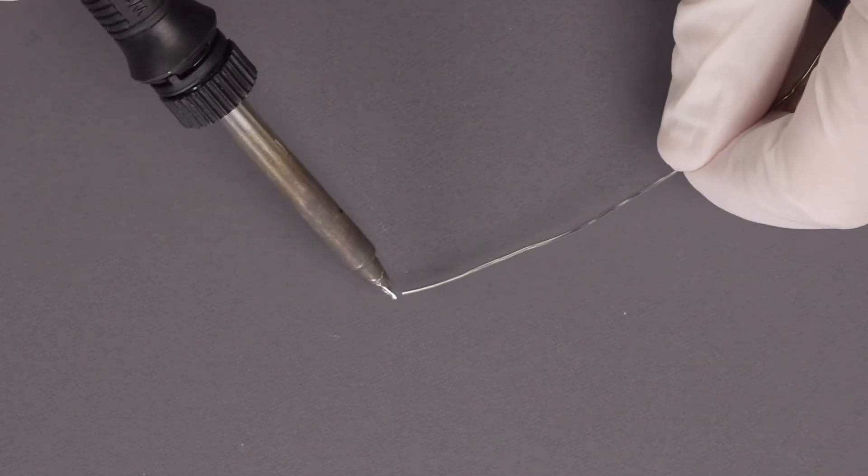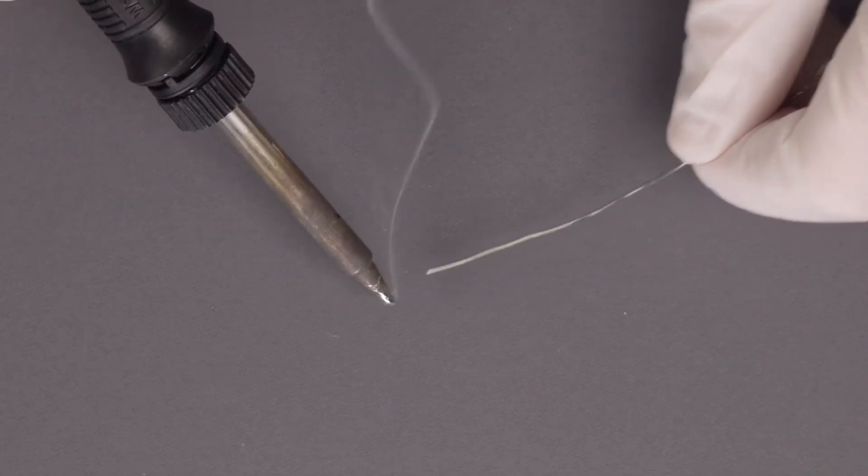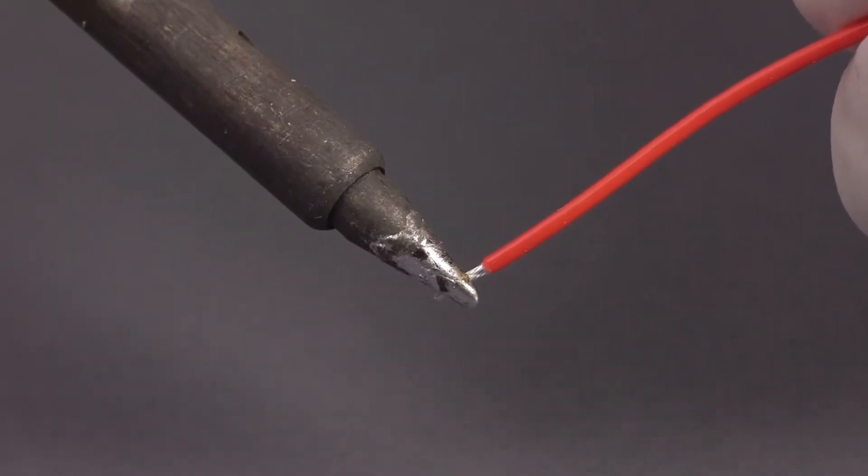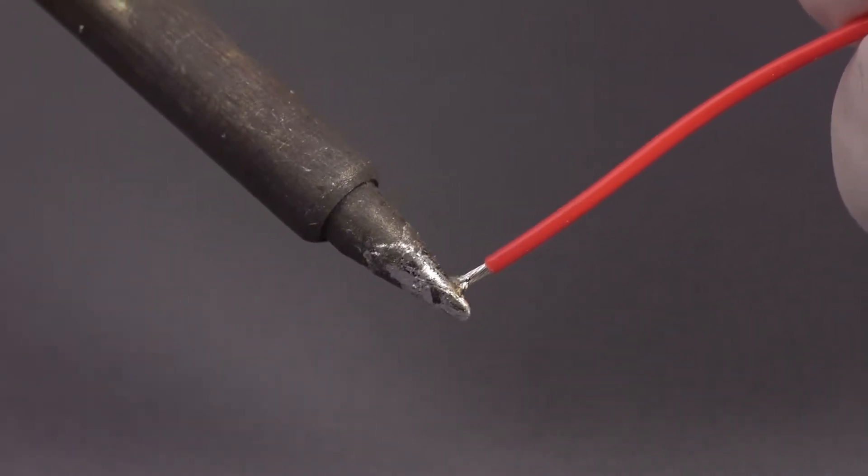Next, we pre-tin the wire. Melt a small amount of solder onto the tip of the iron and touch it to the exposed end of the wire until the solder wets and flows onto the wire.